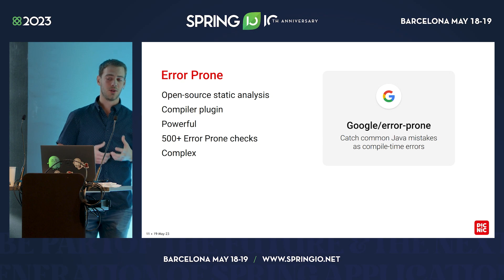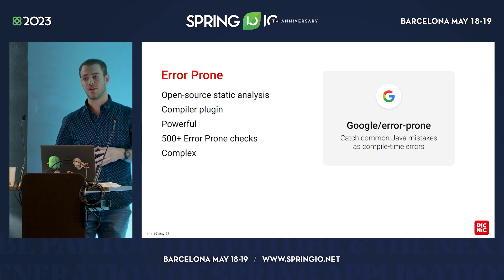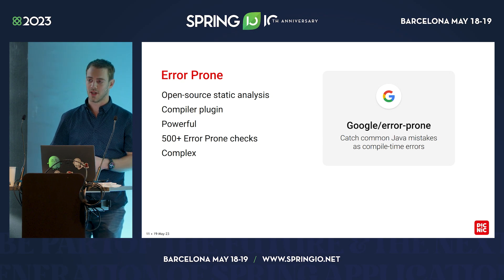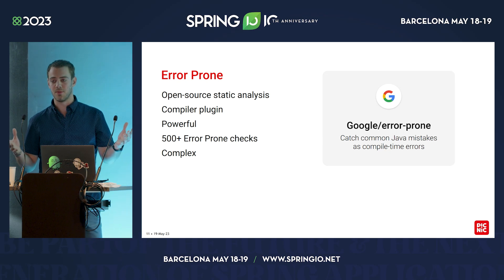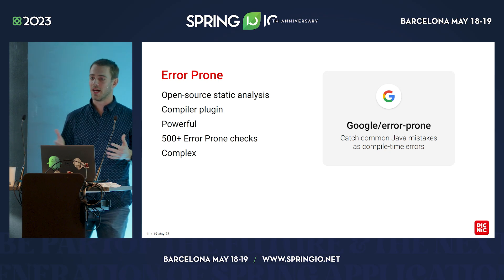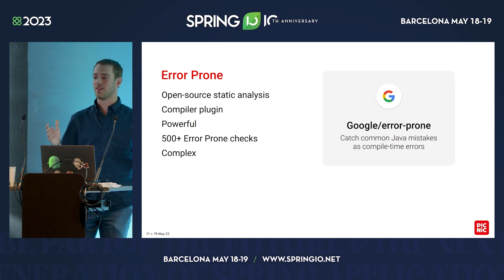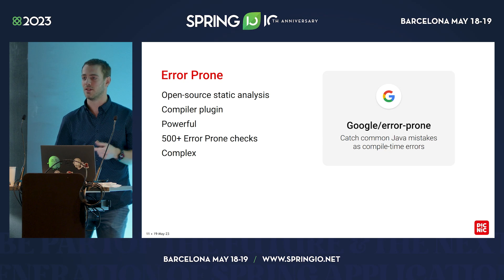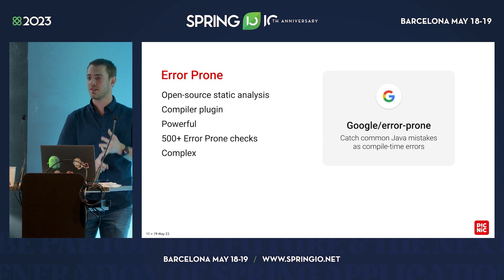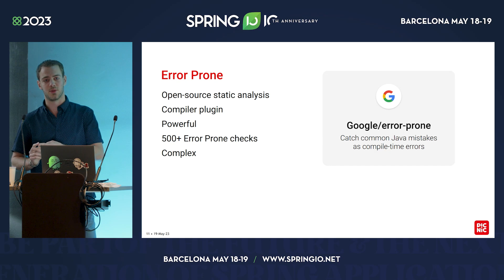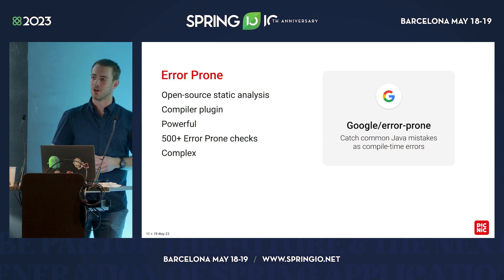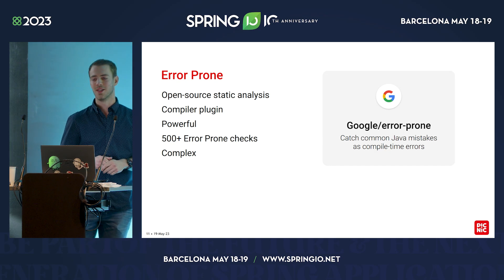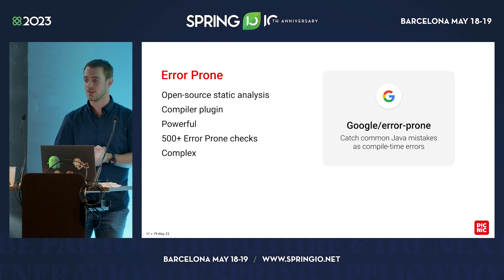Out of the box, Google provides over 500 error-prone checks. You can configure them just as you like — there are three types of severities: error, suggestions, and warnings. You can override the severity and disable specific checks if they don't work for your code base, for example based on the technologies you use. There is one downside to error-prone: if you want to write a check of your own, it can be quite complex because you have to work with the abstract syntax tree.